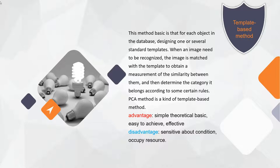The second method is the template-based method. For each object in the database, one or several standard templates are designed. When an image needs to be recognized, it is matched with the templates to obtain a similarity measurement, and then the category is determined according to certain rules. The PCA method is a kind of template-based method. Its advantages are a simple theoretical basis, ease of implementation, and high effectiveness. Even today, template-based face recognition remains one of the most effective identification methods.